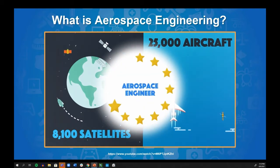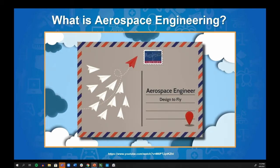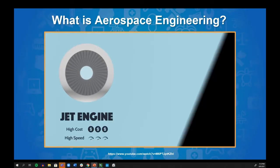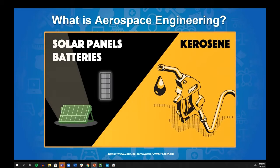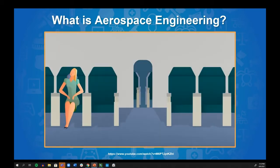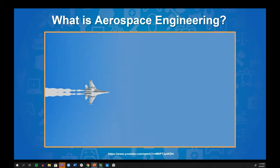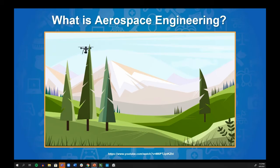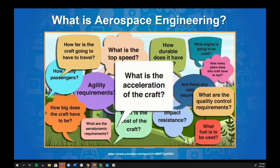With 8,100 satellites and nearly 25,000 aircraft flying around the world, the role of an aerospace engineer is quite special. At the core, an aerospace engineer designs something to fly — aircraft, spacecraft, satellites, missiles. How it intends to fly is where it gets interesting: jet engines or propellers? Classic kerosene fuel or solar panels and batteries? Over 500 passengers, or flying solo? Specializing in air-to-air combat? Traveling over 100 million miles, or just over the ridge for drone shots? These are the questions engineers must answer before any component is designed.